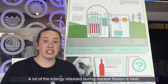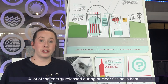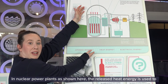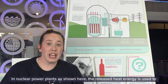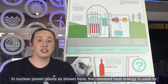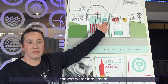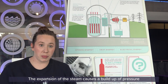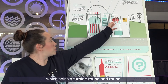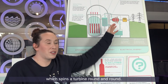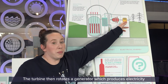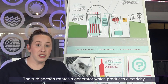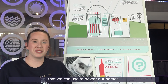A lot of the energy released during nuclear fission is heat. In a nuclear power plant, shown here, the released heat energy is used to convert water into steam. The expansion of the steam causes a buildup of pressure, which spins a turbine round and round. The turbine then rotates a generator, which produces electricity that we can use to power our homes.